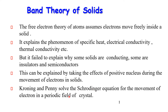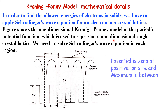Kronig and Penney solved the Schrödinger equation for the movement of electrons in crystals. A crystal is a periodic array of atoms, so they used the property of this periodicity and solved the Schrödinger equation to find the band gap. They solved the Schrödinger wave equation for a one-dimensional crystal lattice. The positive nucleus or positive ions create a potential that is zero at the nucleus side and maximum in between, comparable to a potential barrier and potential well problem.